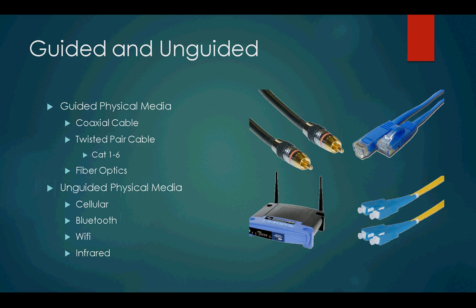To start off, there are two types of physical media: guided and unguided. The unguided physical media is anything wireless — cellular, Wi-Fi, that stuff. Guided physical media is everything else — anything that connects your computer to another computer with some type of cable. I'll only be discussing coaxial, twisted pair, and fiber optics, because as far as I know those are the only kinds still in production.